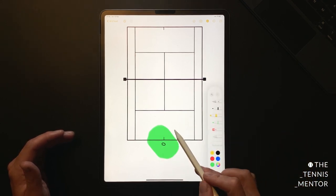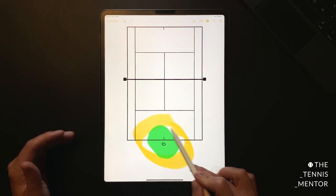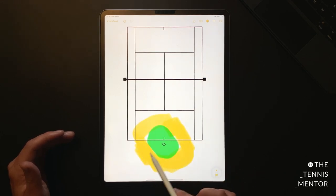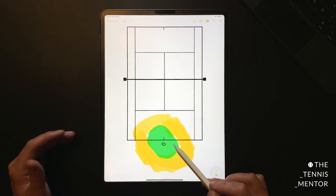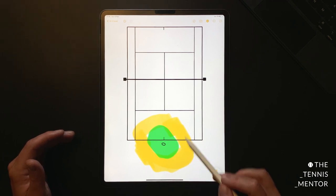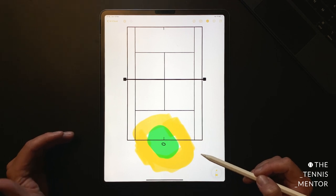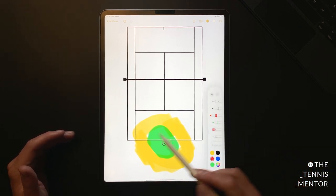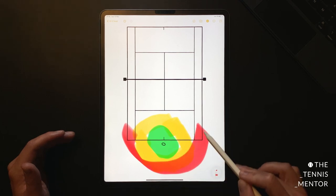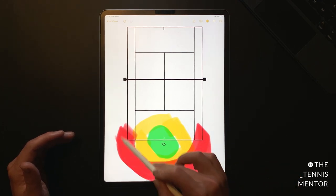Your neutral zone may be here where you're stretched slightly out of your comfort zone, so your priority is to keep the ball in play and keep your opponent under some pressure.